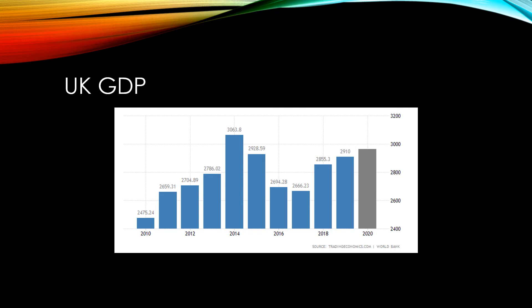A good summary of this chart might say something along the lines of: GDP rose steadily in the UK between 2010 and 2014, where it reached its peak. It then fell away fairly rapidly until 2017. Since 2017, it has seen a strong recovery, but it has not yet reached the peaks of 2014.